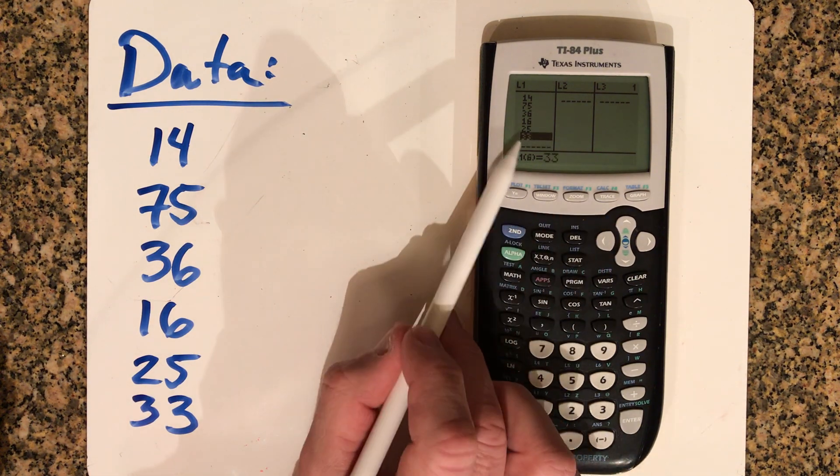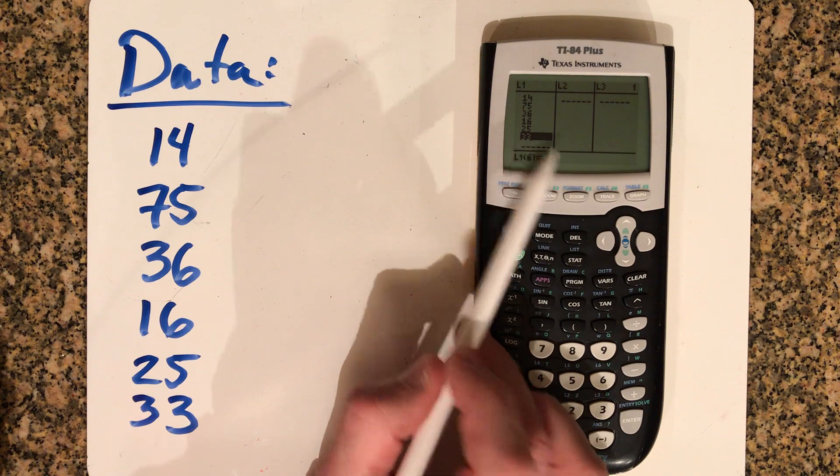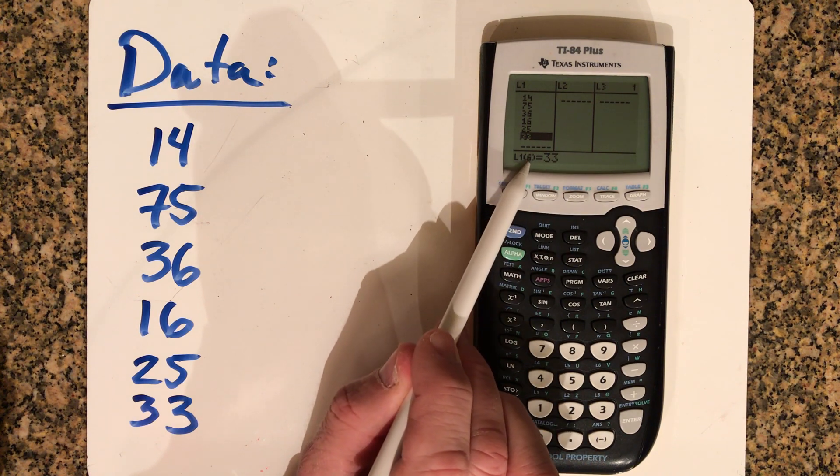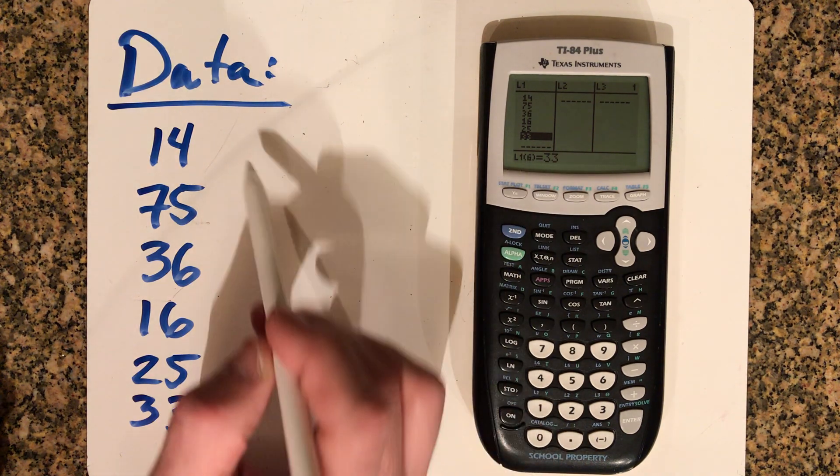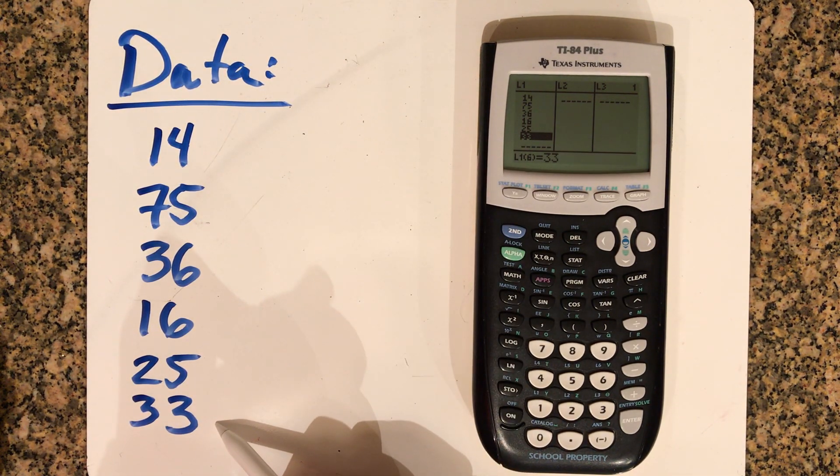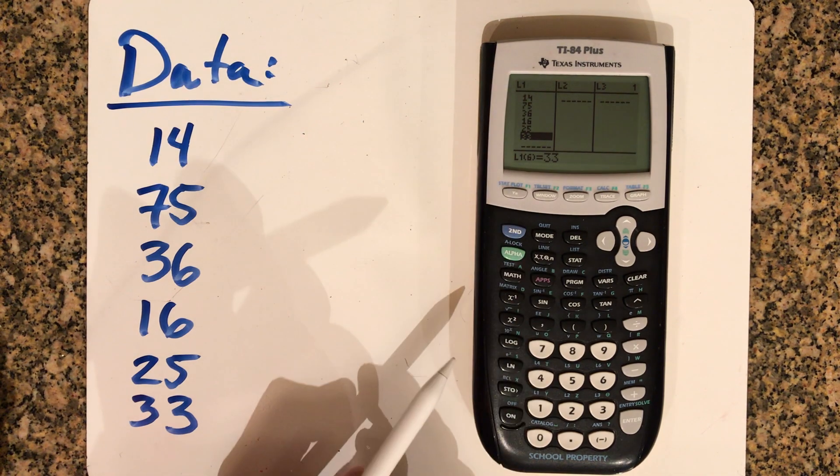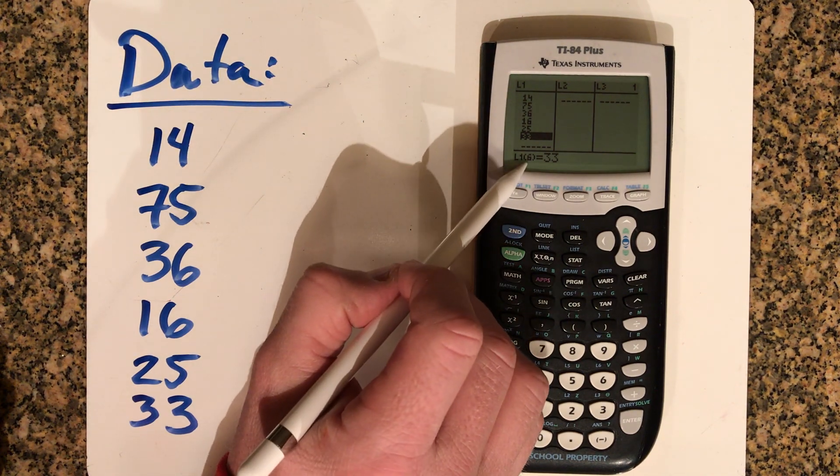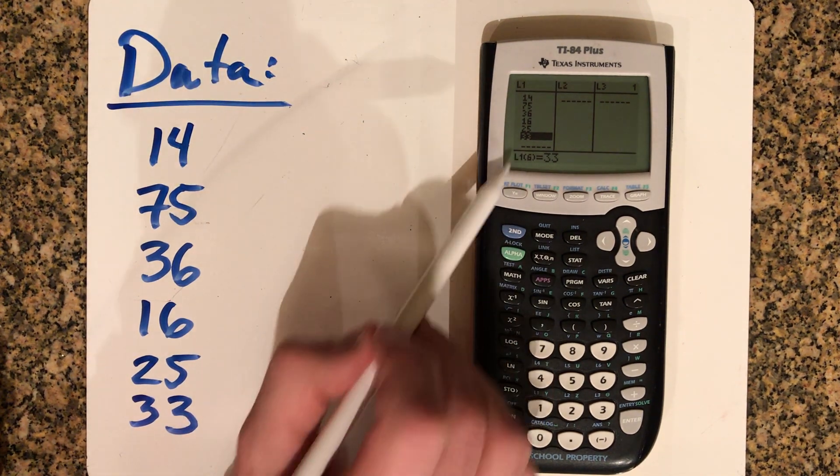Now when you press the up arrow and put your cursor on the last data number or data value, you'll notice that there's a six there. That six is important for you to know. So if you go through a really long list and that number doesn't match the same number of data values that you have here, then you may have skipped a number on accident. So make sure you always take time to check if you possibly skip a number. That number should always match.